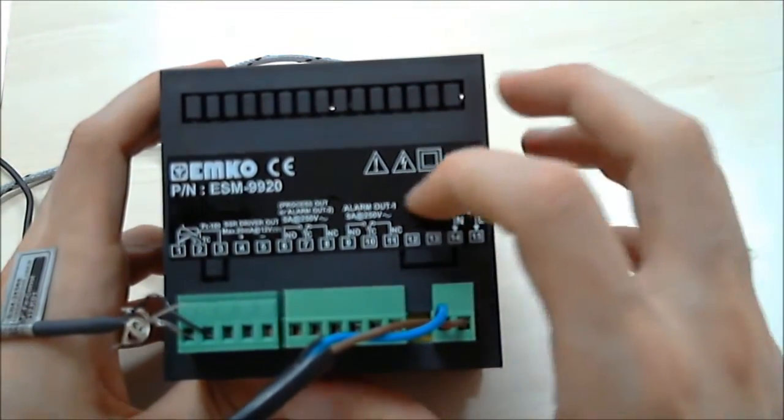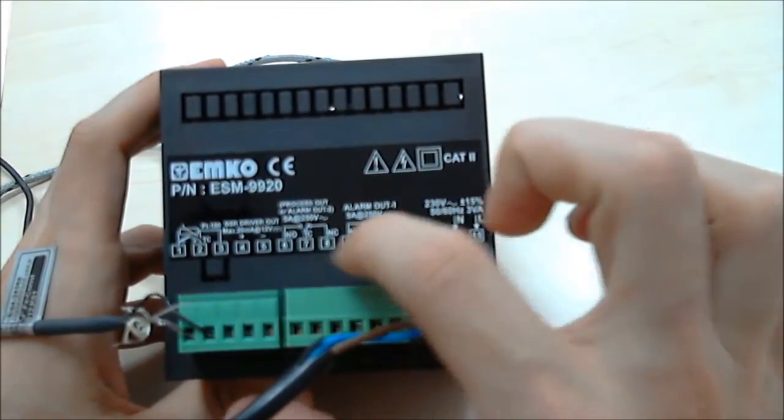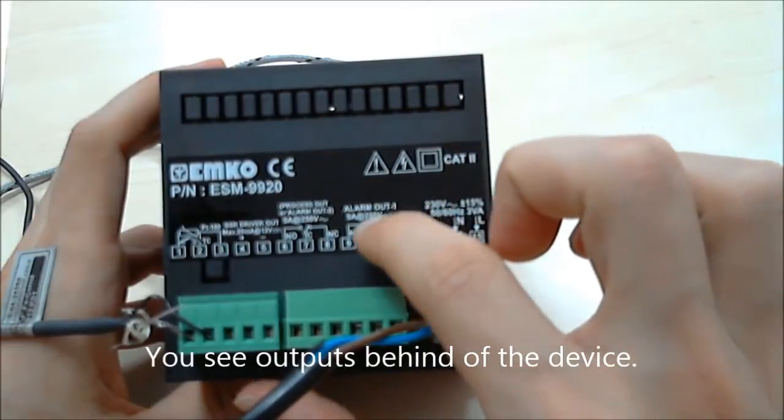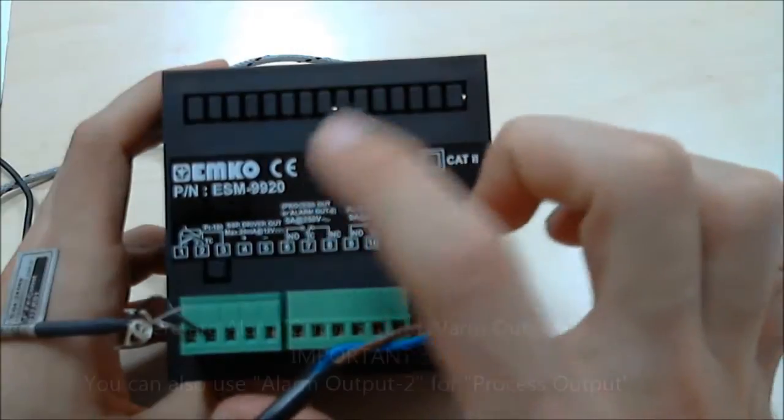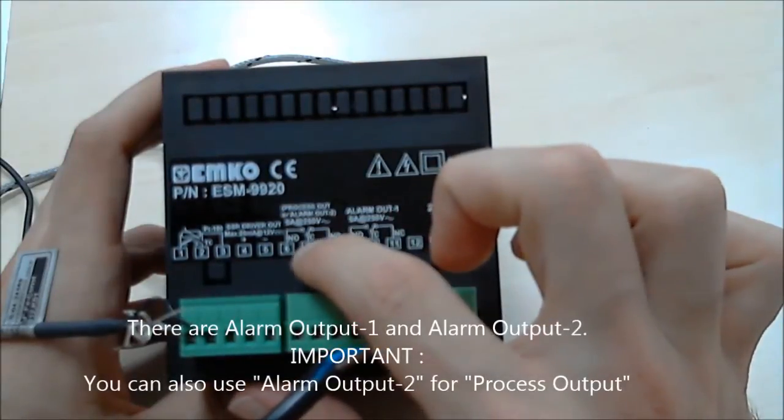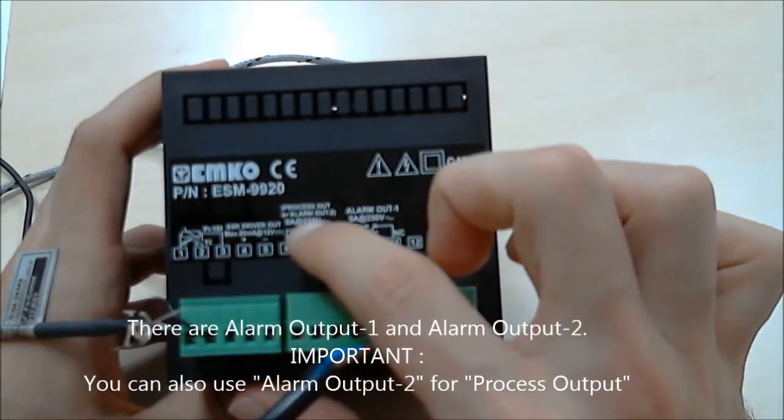Behind the device, as you see here, there are two outputs: alarm output 1 and alarm output 2. You can also use these outputs for process output.